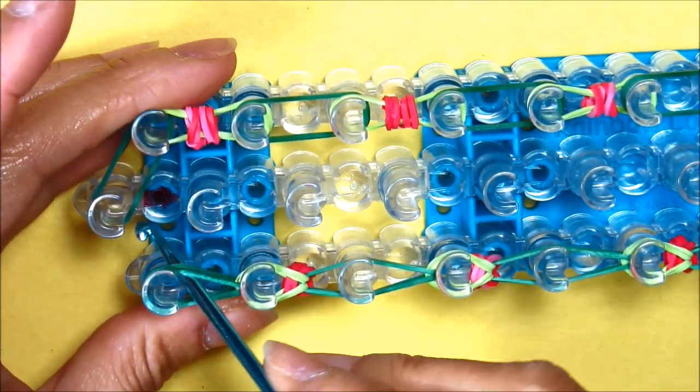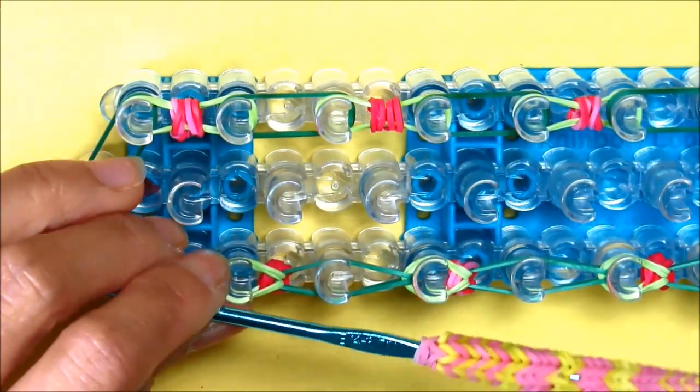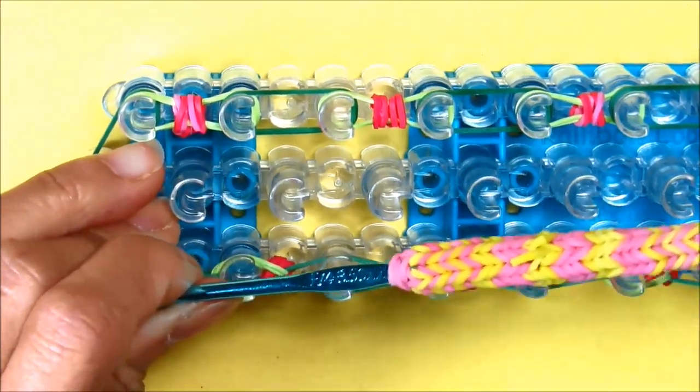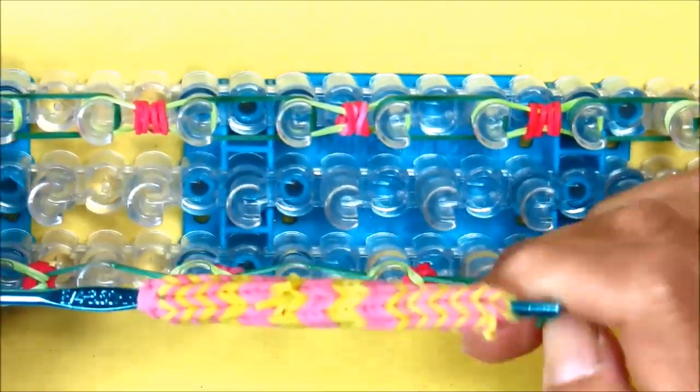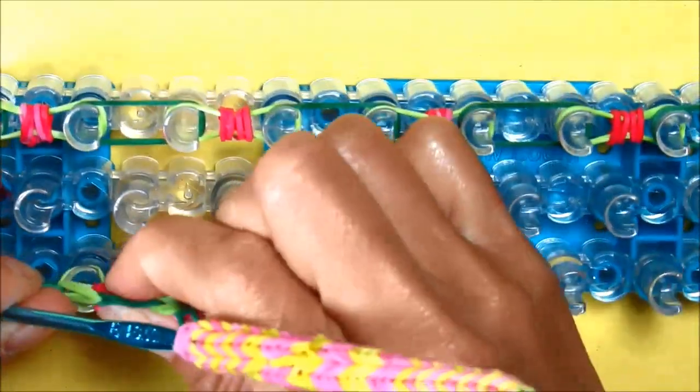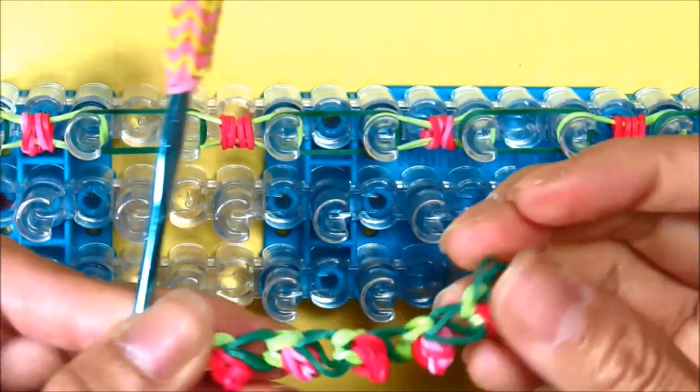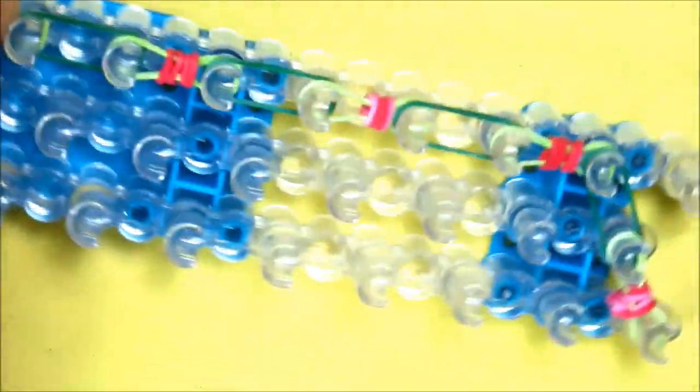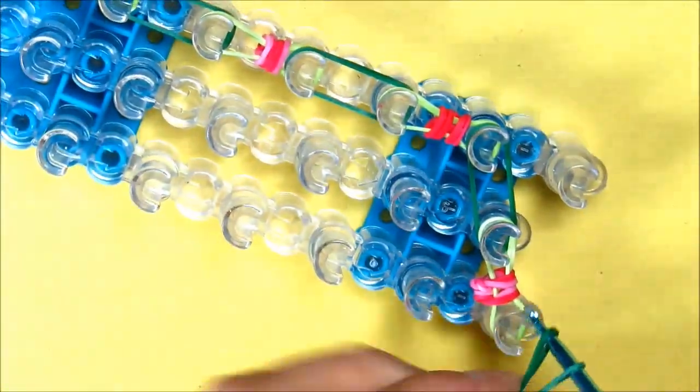Now we're going to take this side off the loom, pull this connector bracelet off the loom, and we'll attach it to the end here.